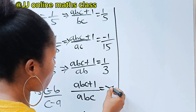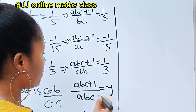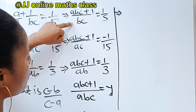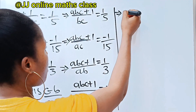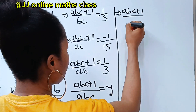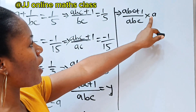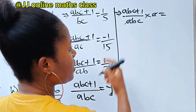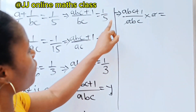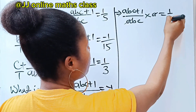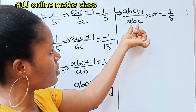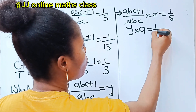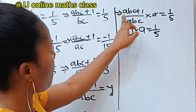Let's call this y, so y equals abc plus 1 over abc. For the first equation, if we multiply y by a, we get abc plus 1 over bc — and abc plus 1 over bc is 1 over 5. So y times a equals 1 over 5.